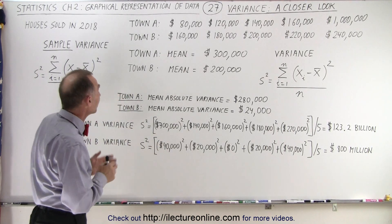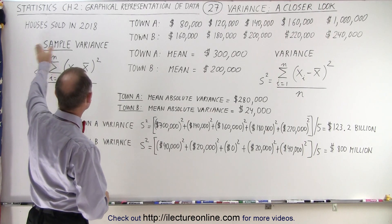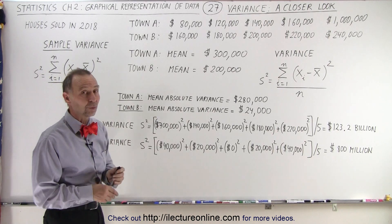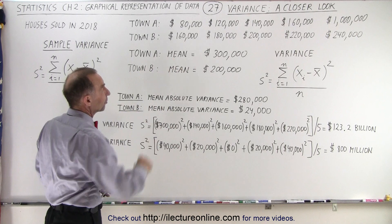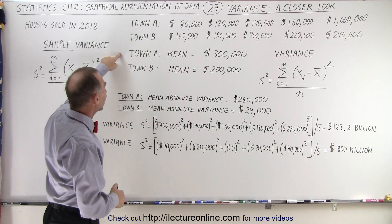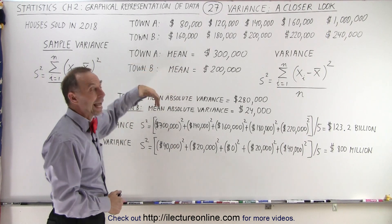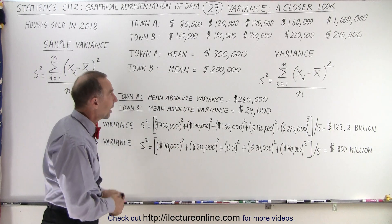So let's go back to what we were doing before. We had two towns. In each of the two towns, five houses were sold. Those were the sale prices of the five houses. We calculated the mean or the average house price for each of the towns.